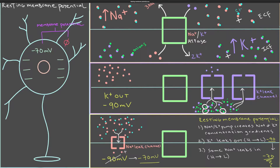In the last video we saw how a cell sets up its resting membrane potential. The main way it does it is that potassium leaves the cell and goes outside, leaving behind negative charge on the inside. But something's weird: potassium will keep leaving the cell until minus 90 millivolts, and then it will stop leaving.